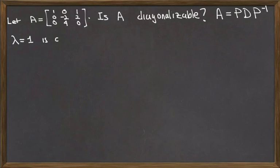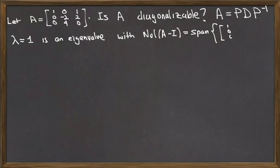We saw that lambda equal to 1 was an eigenvalue of the matrix A. The corresponding eigenspace, which is the null space of A minus I, is spanned by the single vector [1, 0, 0]. So [1, 0, 0] is an eigenvector corresponding to lambda equal to 1.